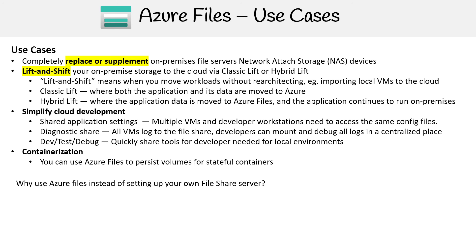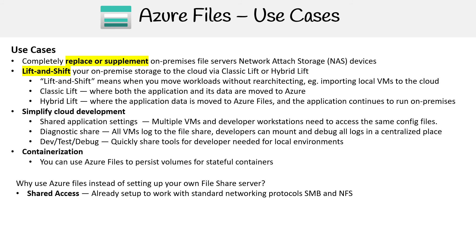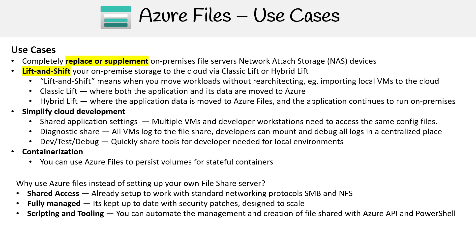Another question is why would you use Azure Files instead of setting up your own file share server? The reason is shared access — it already has the standard protocols baked in so you don't have to configure them, and it's fully managed. This is something that shouldn't be overlooked, because it's very difficult to scale a file server. Azure will apply patches automatically and it will scale automatically. It also has a lot of scripting and tooling built in — you can use the Azure API or PowerShell to automate the management and creation of files. And it's also extremely resilient, so you can be sure it's going to remain running.